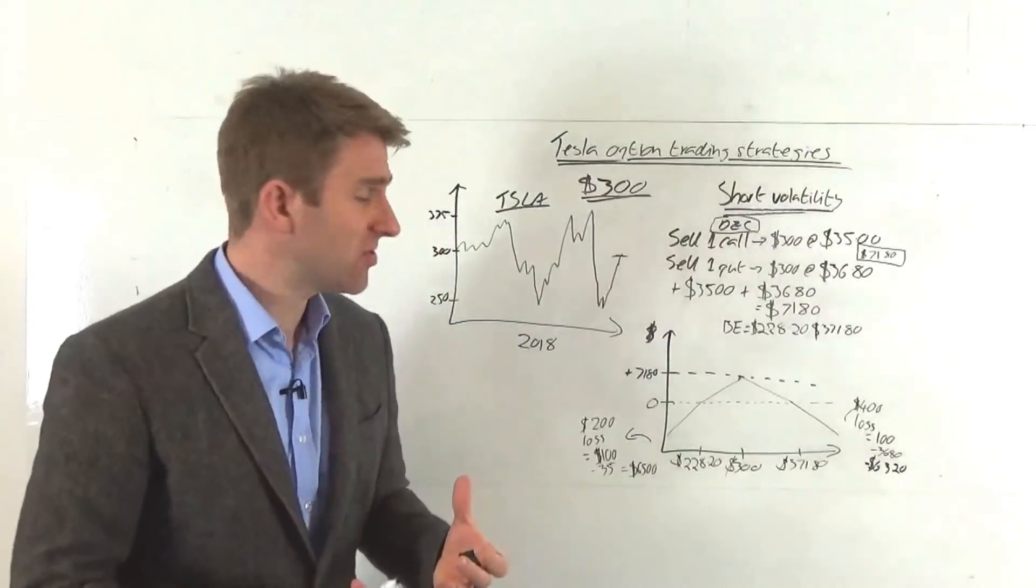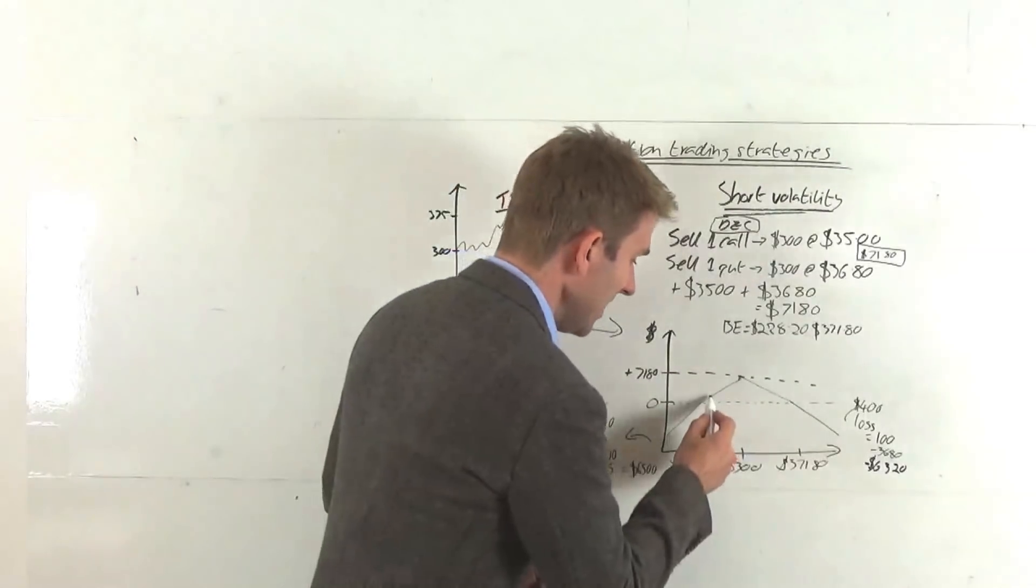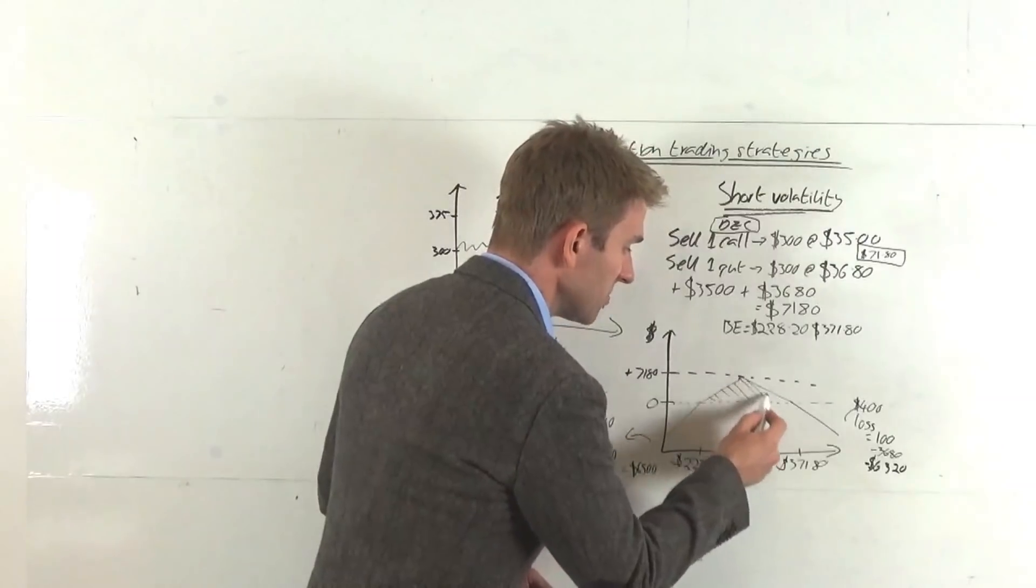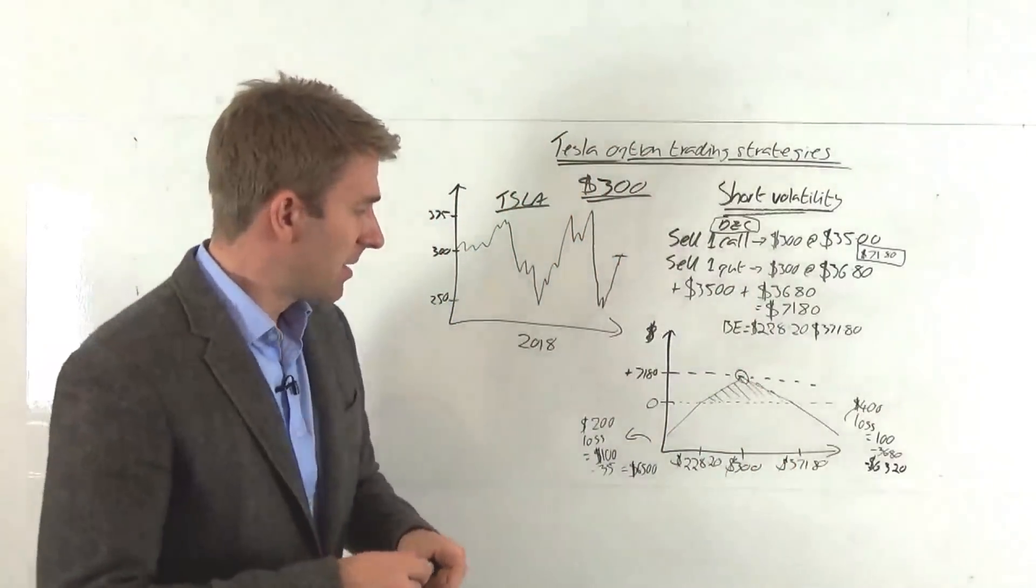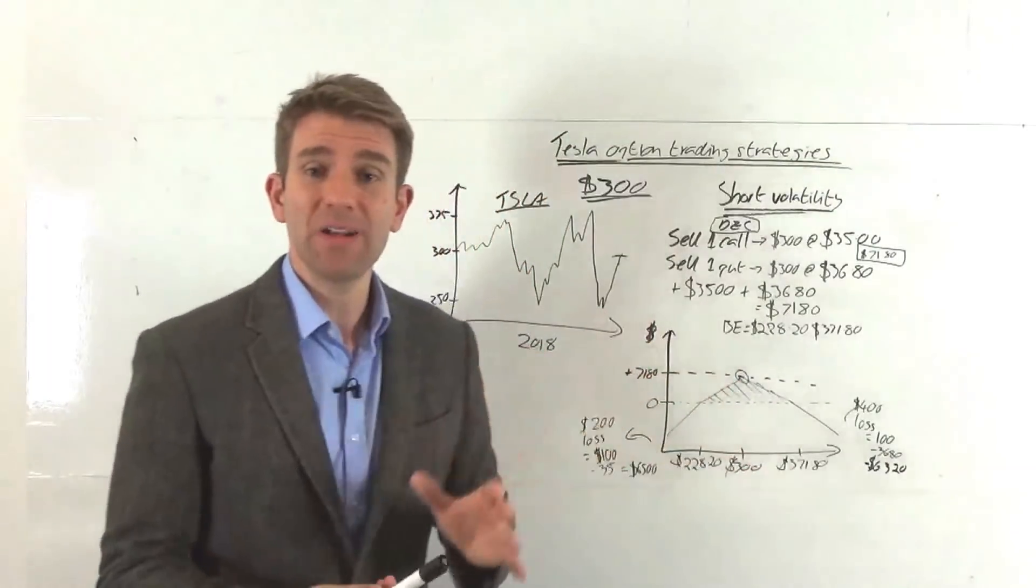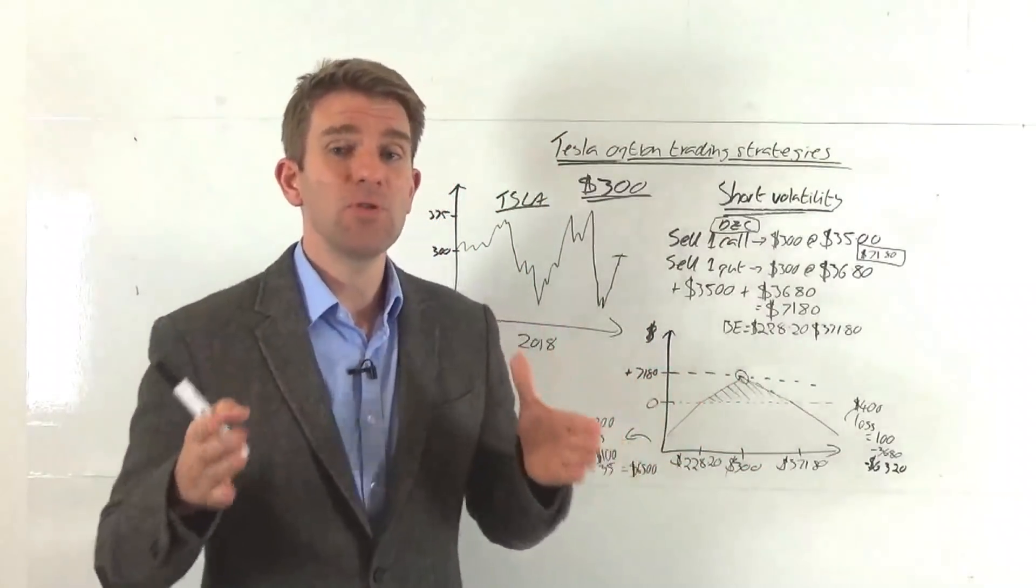So we get a payoff graph that looks a little bit like this. There's our maximum payoff of $7,180. Anywhere between $228.20, I'm putting dollars here, this is the price by the way of Tesla, and $371.80, we are in the money. So we've got quite a big range there. That's a big old range. Anywhere in here, we're in the money. And of course, the closest to $300 is the big money, $7,000.